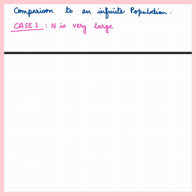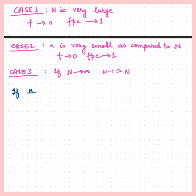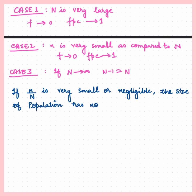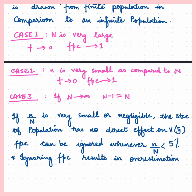We will understand a few cases. Case 1: suppose N is very large, then f tends to 0 and FPC tends to 1. Case 2: when n is very small compared to N, then again f tends to 0 and FPC tends to 1. Case 3: suppose N tends to infinity, then N−1 is approximately equal to N. Please note that ignoring FPC results in overestimation of the variance of y-bar.